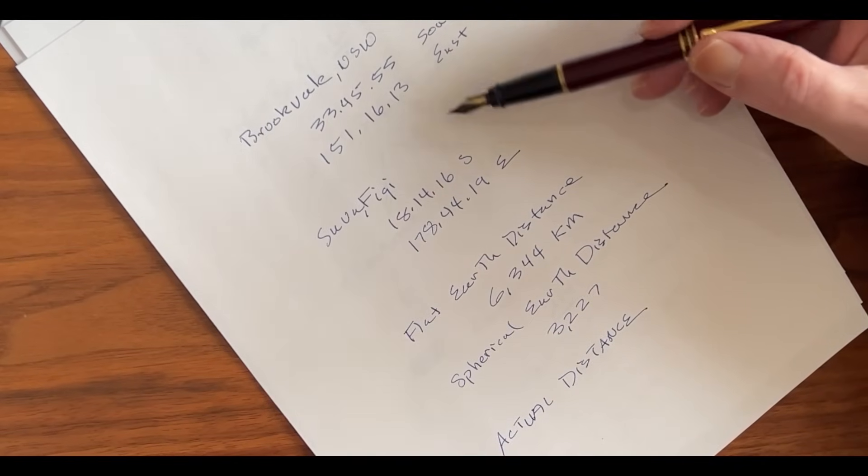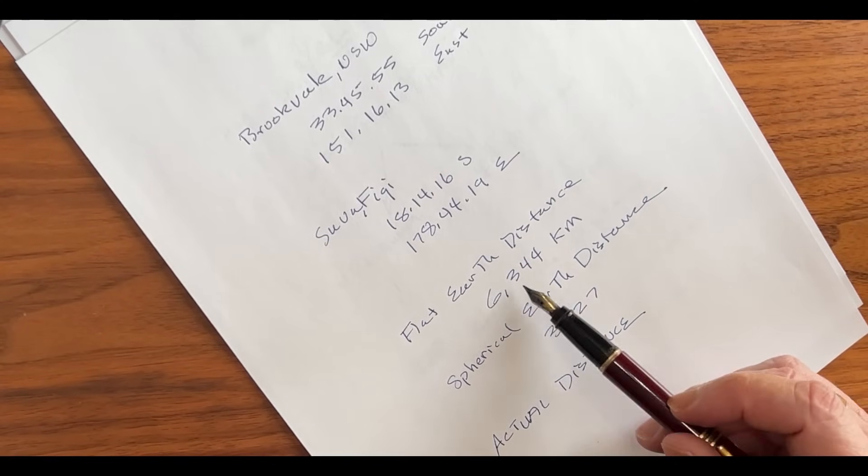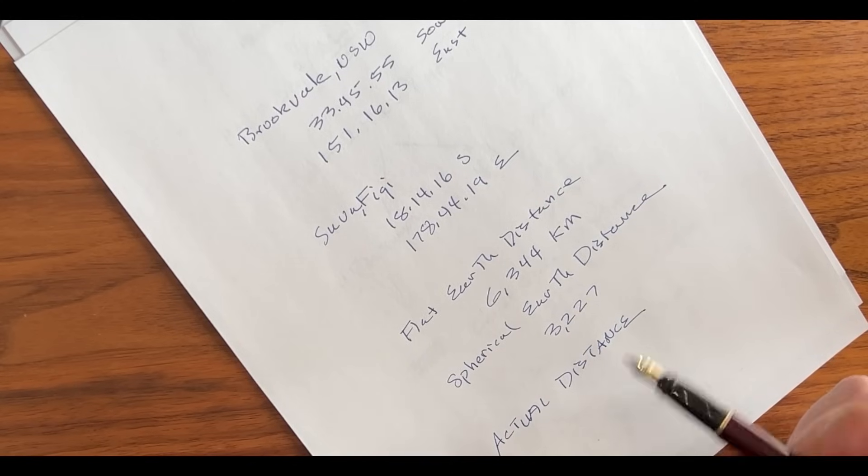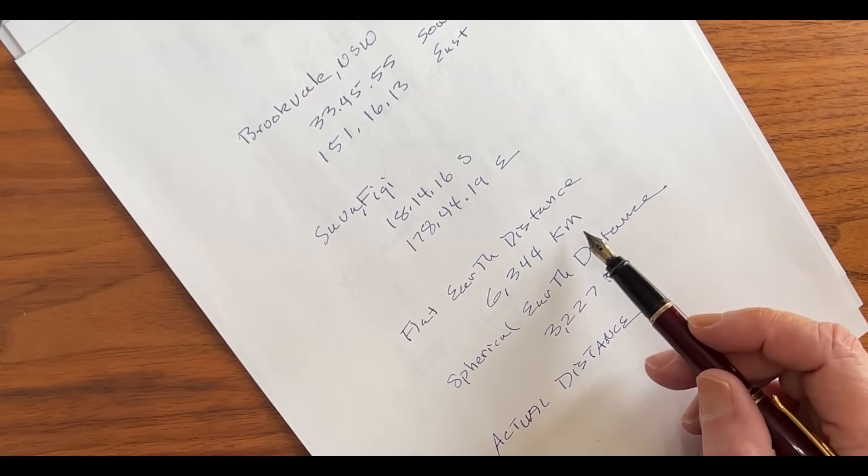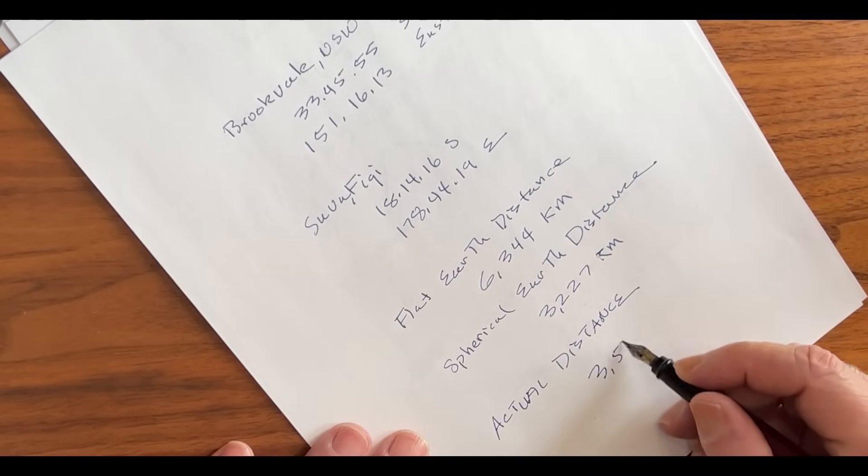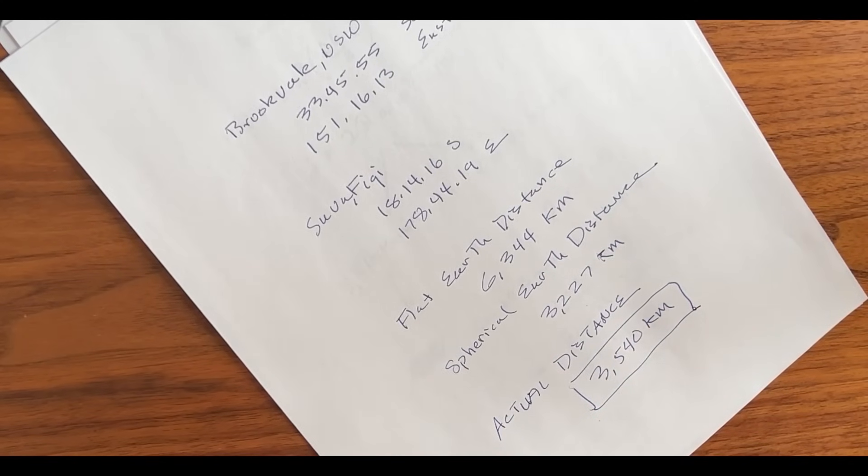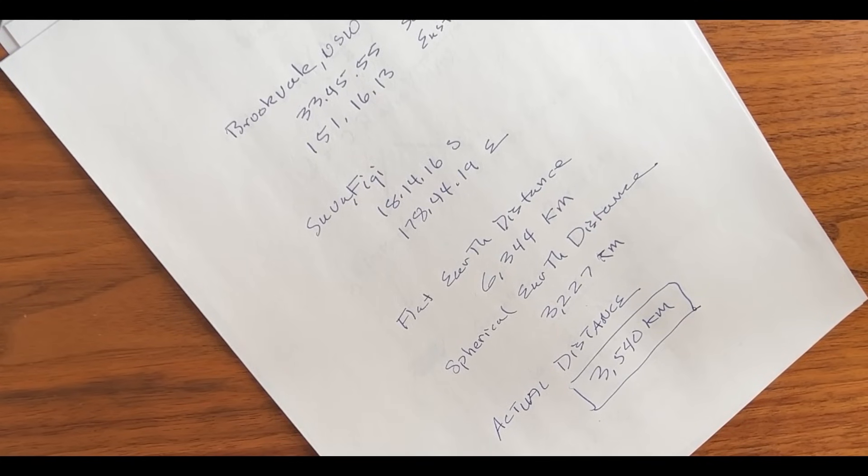The flat earth distance is 6,344 kilometers. The spherical earth distance is 3,227 kilometers. If the actual distance of the cable is less than this number, it rules out the flat earth. What's the actual distance? 3,540 kilometers. This is impossible on a flat earth. It is completely compatible with a spherical earth of radius 6,371 kilometers. And as my friend Simon Dan likes to say, done and dusted.